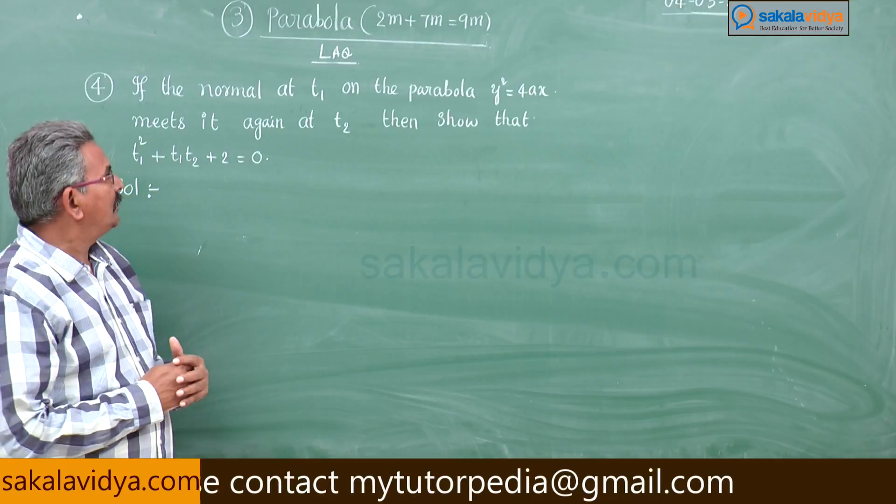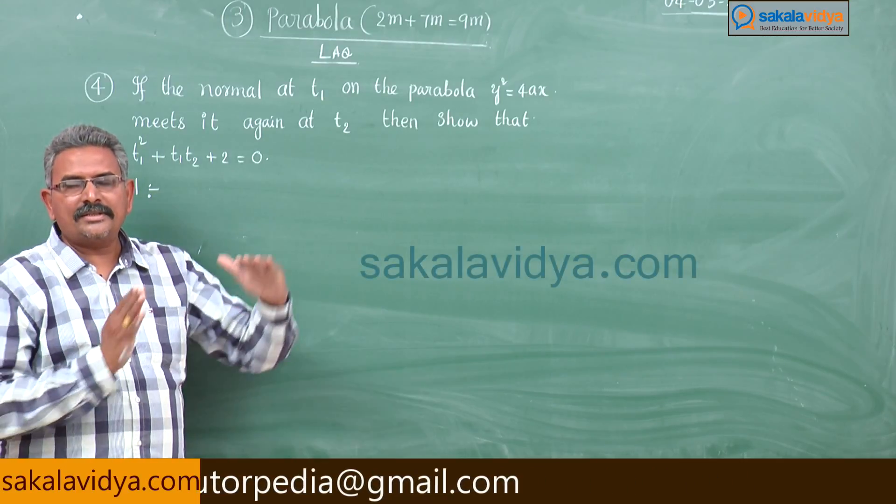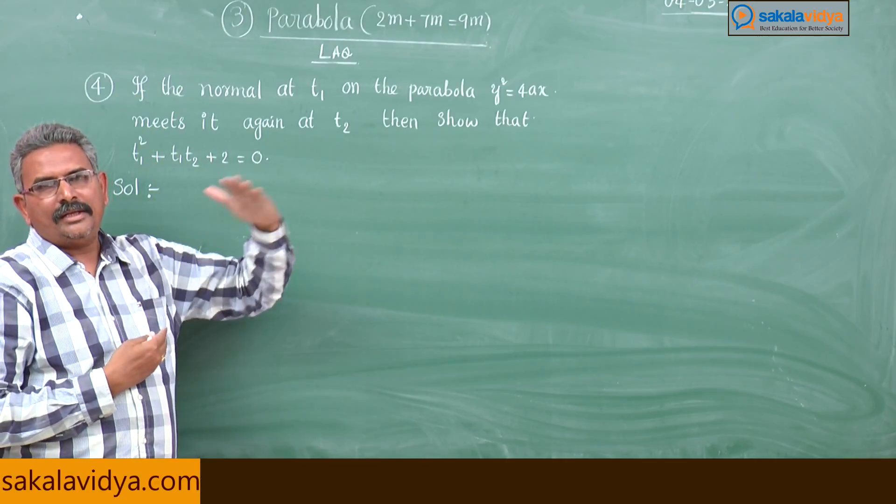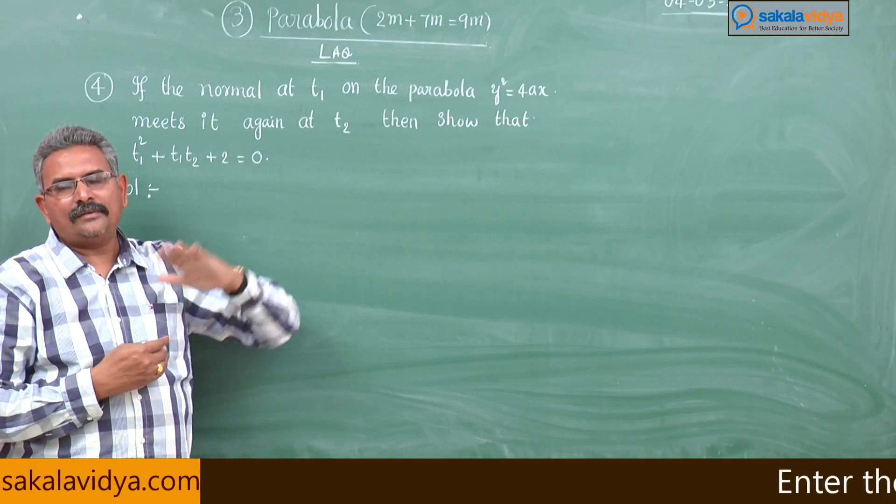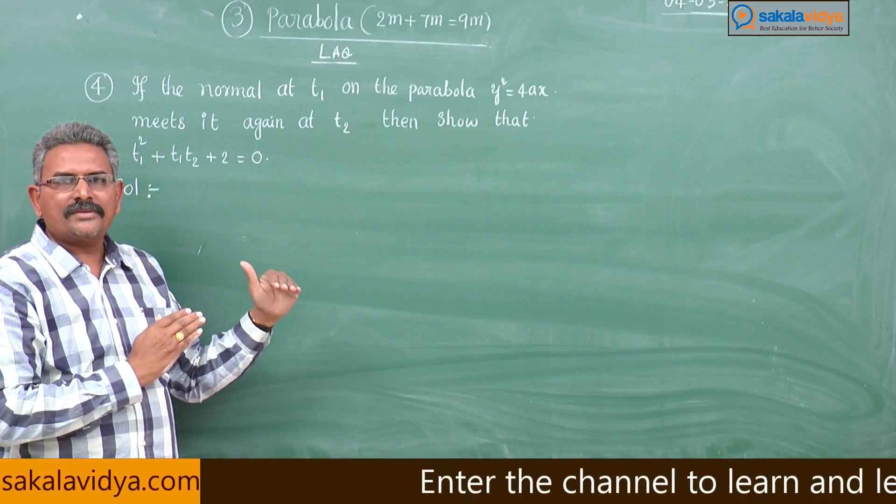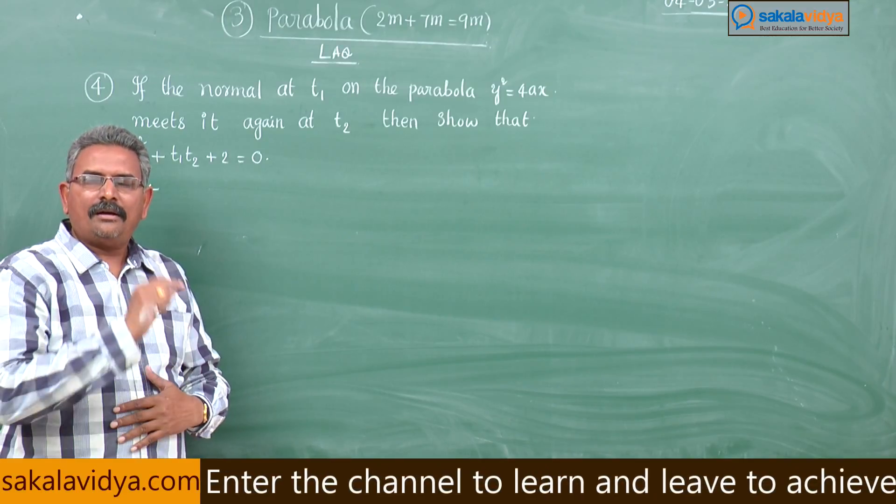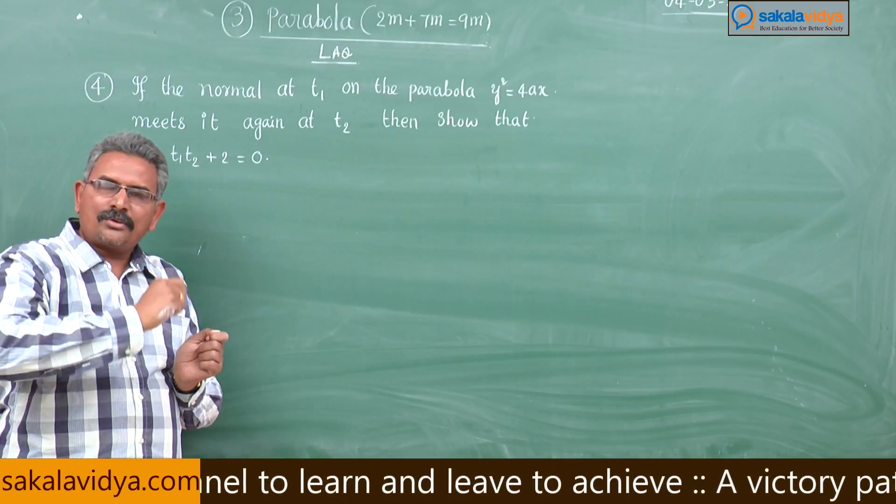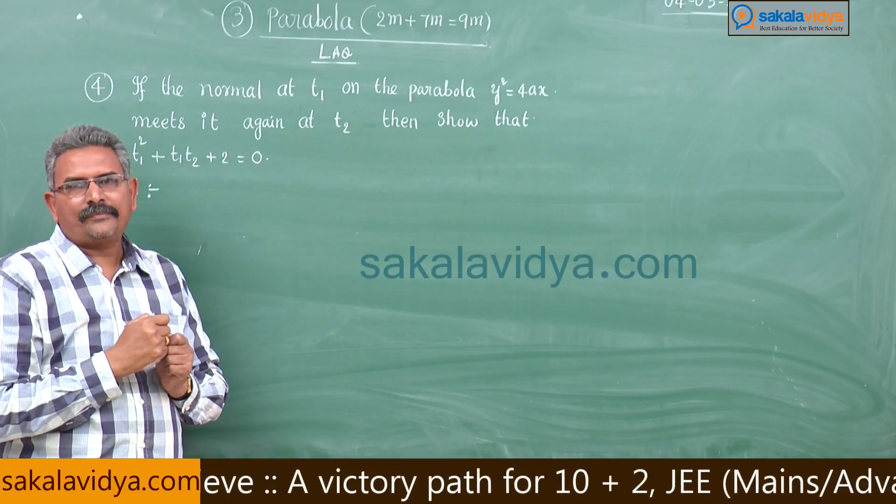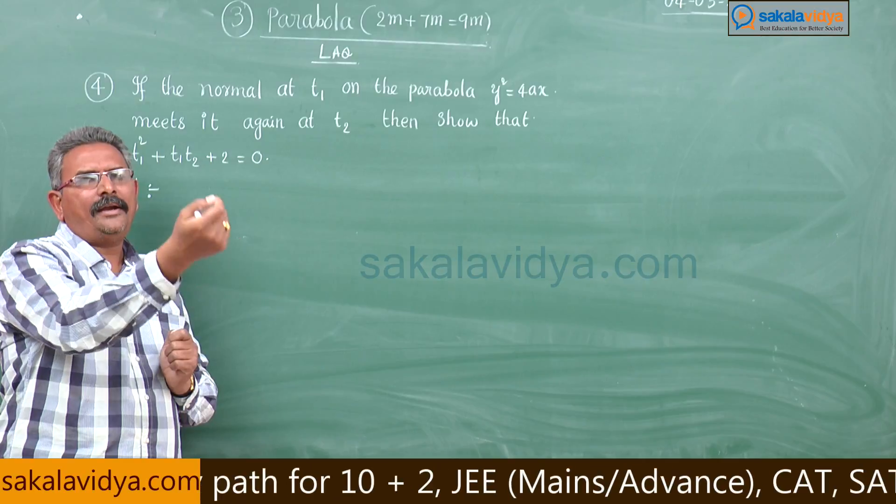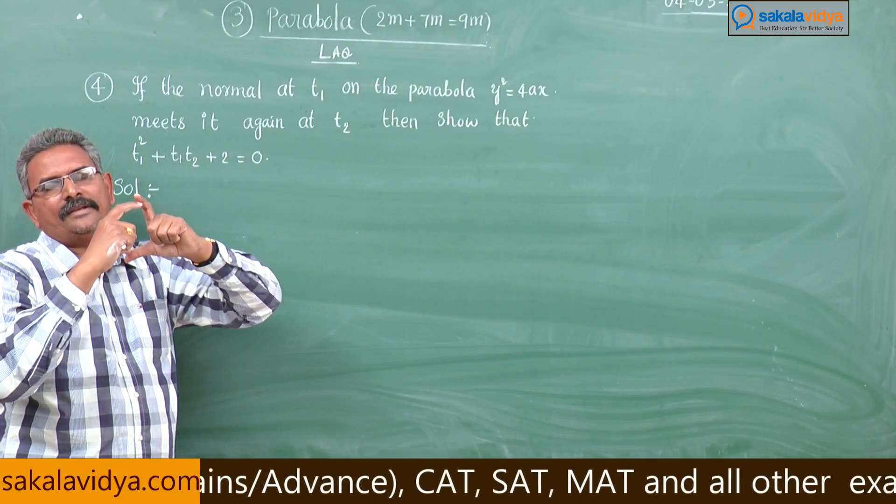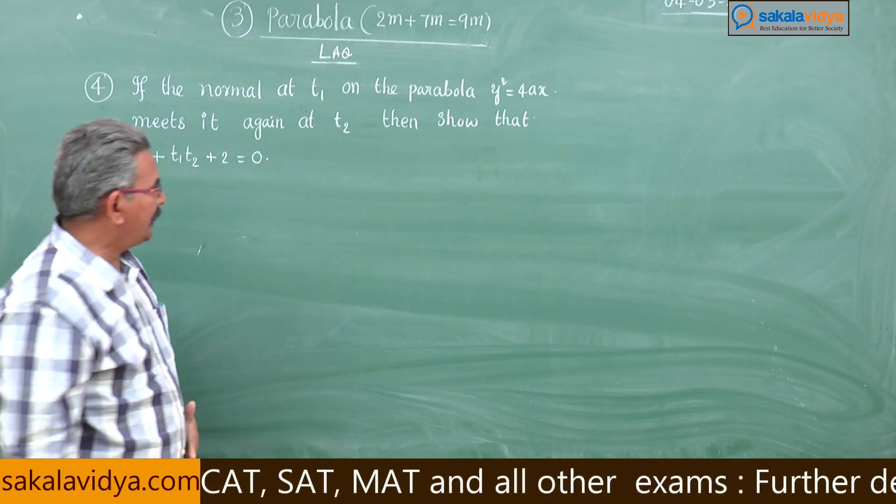Otherwise, first of all let us consider two points t1 and t2 on the parabola. Join them, you get a chord. t1 and t2 are the two endpoints of the chord of the given parabola. At t1, let us find out first the equation to the normal. The slope of that chord is nothing but, so that is a normal chord, and the chord is the same. Both the slopes are equal. If you equate the slopes, then we get this condition. Let us draw the figure first.